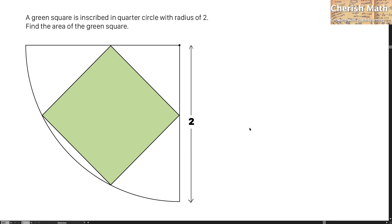Hi from Cherish Math, and this is the problem. A green square is inscribed in a quarter circle with radius of 2. Find the area of the green square.